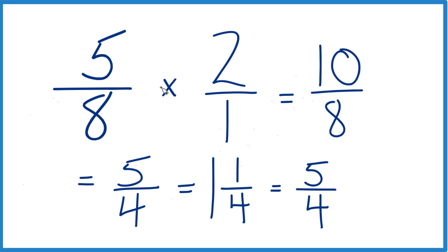That's how you multiply 5 eighths times 2. The answer, 1 and 1 fourth or 5 fourths. It's Dr. B and thanks for watching.